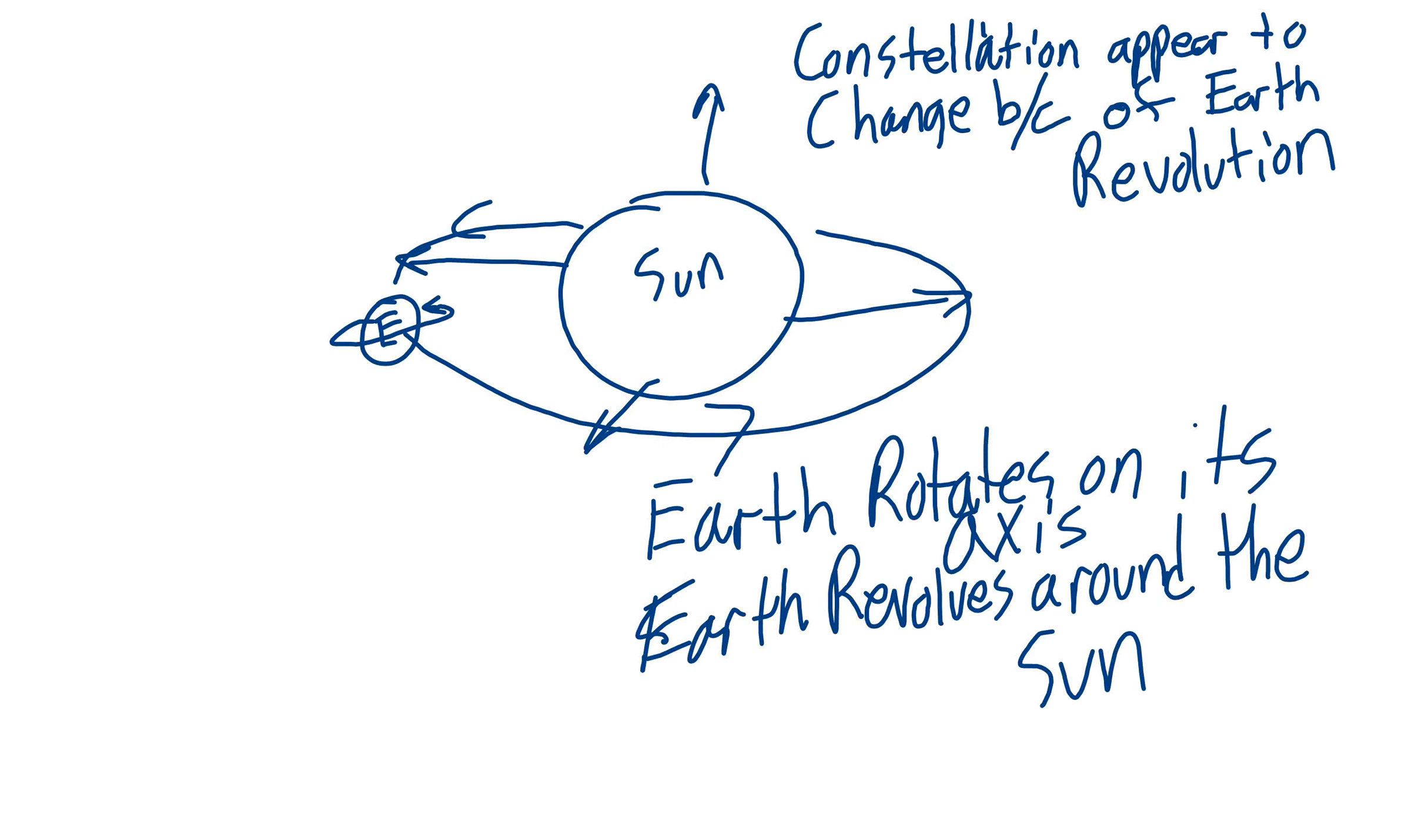All right, so the first thing you need to know for the next exit ticket is that Earth rotates on its axis. So imagine sitting in an office chair and spinning around and around. That is rotating. That's what makes our night and day.